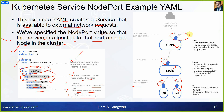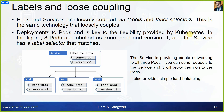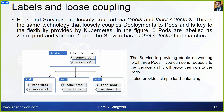Labels and loose coupling — I want to emphasize the selector part. Pods and services are loosely coupled via labels and label selectors. This is the same technology that loosely couples deployments to pods and is the key to the flexibility provided by Kubernetes. In this figure, three pods are labeled `zone=production, version=1`, and the service has a label selector that matches `zone=production, version=1`. The service provides stable networking to all three pods and load balances requests across them.